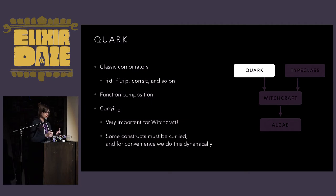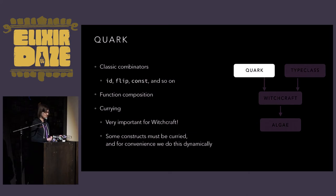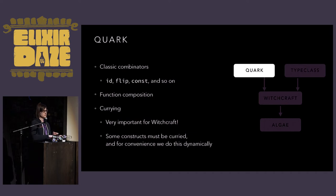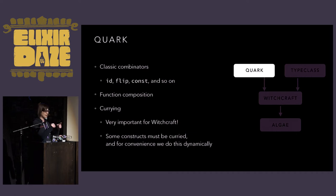Also brought in functional composition — instead of always having to pass through an argument, you can take two functions, compose them together, and get back another function without messing around with the arguments; they just get piped through automatically. And currying. In Elixir, we have the concept of arity — foo slash one is different than foo slash two. But for some things to work in Witchcraft, we need the ability to partially apply them very frequently without any programmer overhead. We have that both dynamically, where you can wrap things with a small runtime penalty, and also as a macro for doing this at compile time, where you don't have the runtime hit.